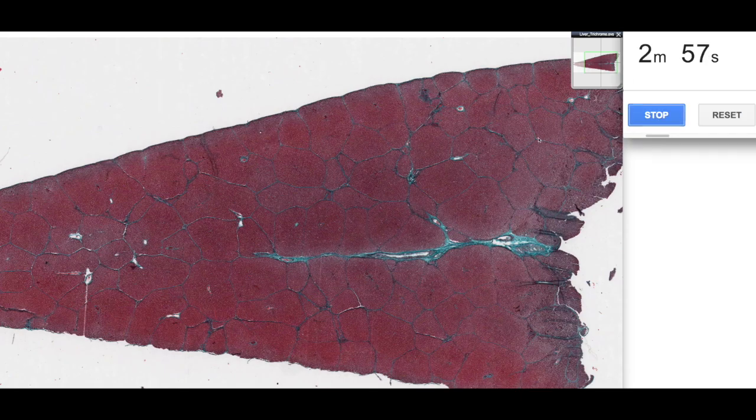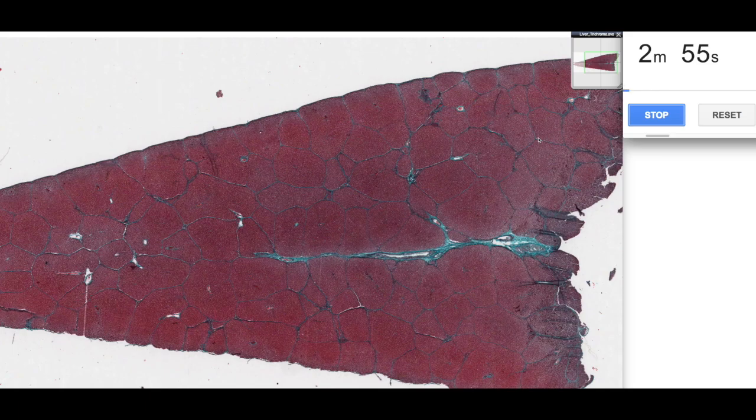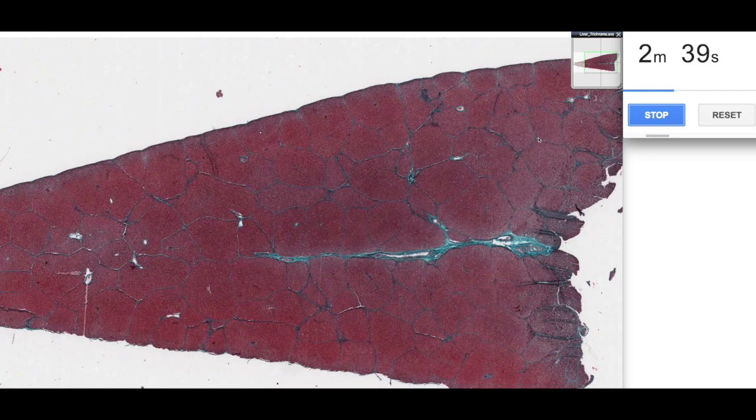So what I've done is I've taken this trichrome stain section because it really highlights the classic features of the histologist's understanding of the structure of the liver. In here, green or blue is the connective tissue fibers, so the collagen and elastic fibers, and the red is the more functional cells, the parenchyma of the liver.